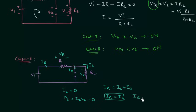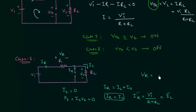IR equals VI divided by (R plus RL), which is also equal to IL. We can then calculate VR equals IR times R, and VL equals IL times RL. This is what we do in case 2.